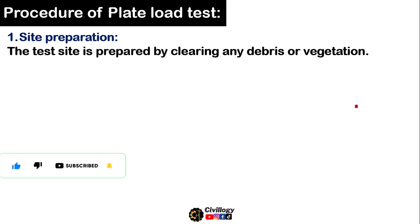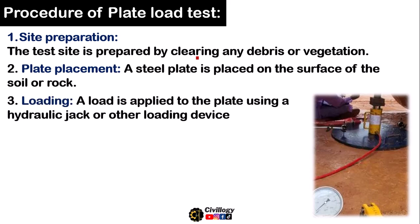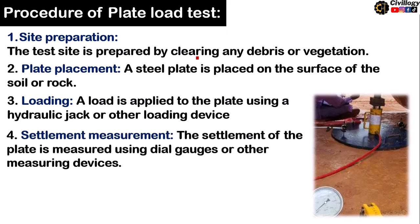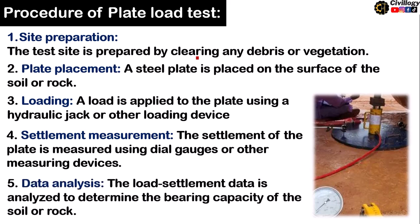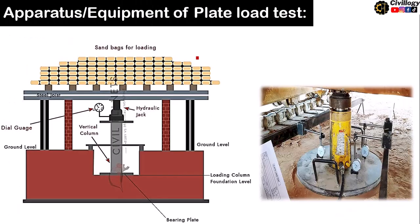The procedure for plate load test begins with site preparation by clearing any debris or vegetation. Then a steel plate is placed on the surface of the soil or rock. Load is applied to the plate using a hydraulic jack or other loading devices. Settlement of the plate is measured using dial gauges or other measuring devices. Finally, the load-settlement data is analyzed to determine the bearing capacity of the soil or rock.